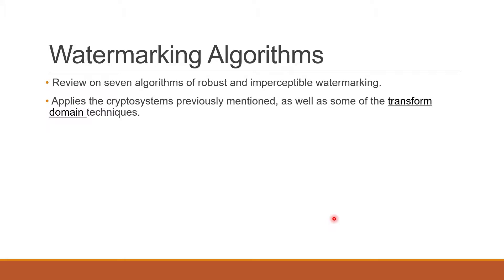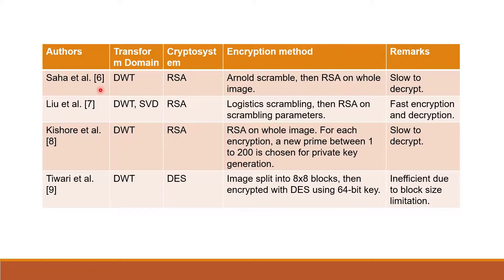We will review seven algorithms of robust and imperceptible watermarking which apply cryptosystems. First is by Saha et al., who applied DWT and RSA. The watermark image is scrambled using Arnold's scrambling, then RSA is performed on the whole image. It is slow to decrypt because RSA is performed on the whole image, and since an image is very large data, it is very slow. Next is Liu et al., who applied a hybrid of DWT and SVD with the RSA cryptosystem. The watermark is scrambled by logistics, and then RSA is performed on the scrambling parameters of the logistics. This is much faster because RSA is only performed on the parameters, which is a much smaller plaintext than a whole image.